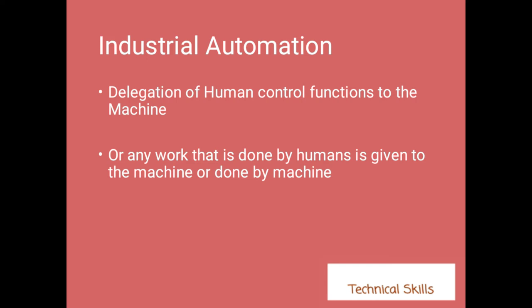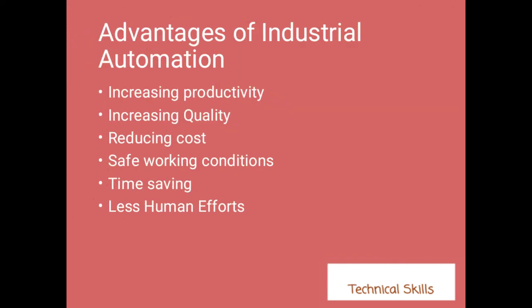Now let's discuss the advantages of industrial automation. The first advantage is increasing productivity — to increase productivity we need industrial automation. The second advantage is increasing quality. With the help of machines we can achieve the best quality because the precise work that we need can be done by machines.